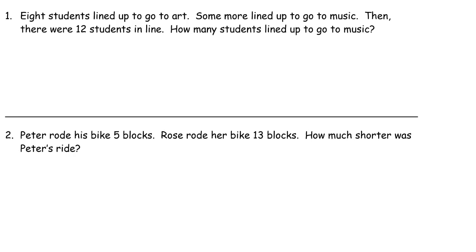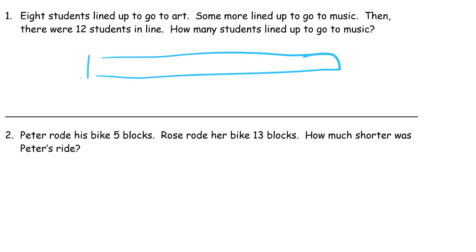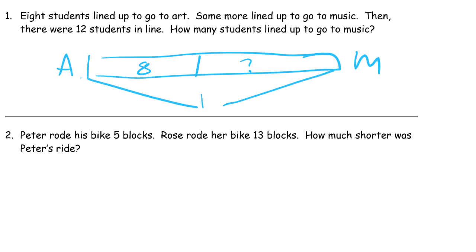This is a story where students are going to different specials — some students are going to art, some are going to music, so I'm just going to draw the line. There are art students at this end and music students at this end. There are eight art students, and we don't know how many lined up for music. But we do know that the whole line from end to end has twelve students.